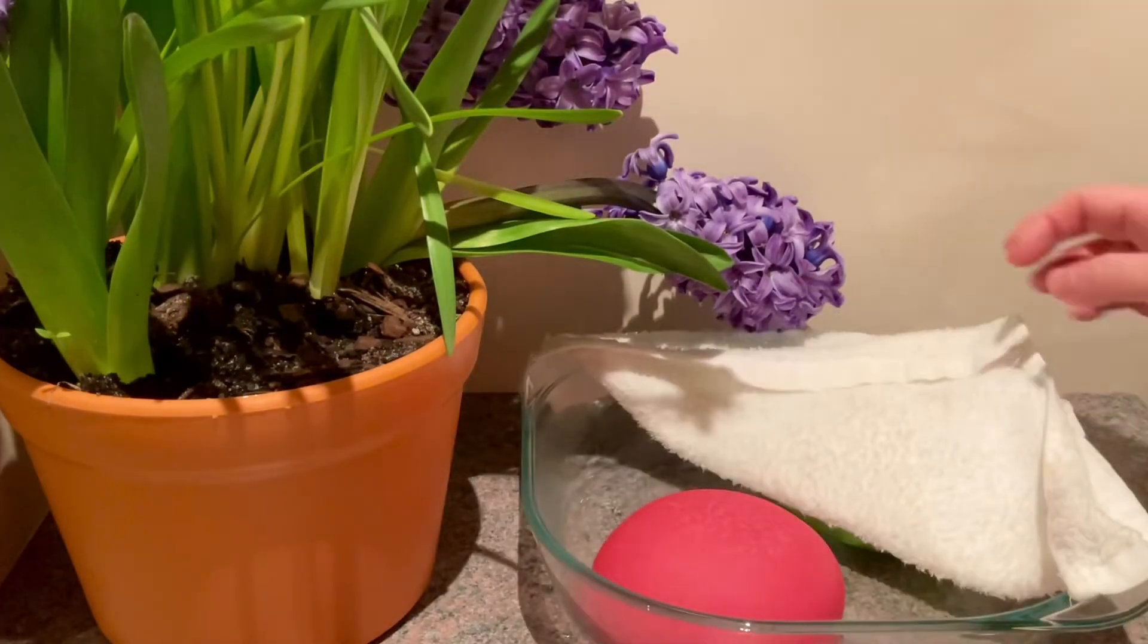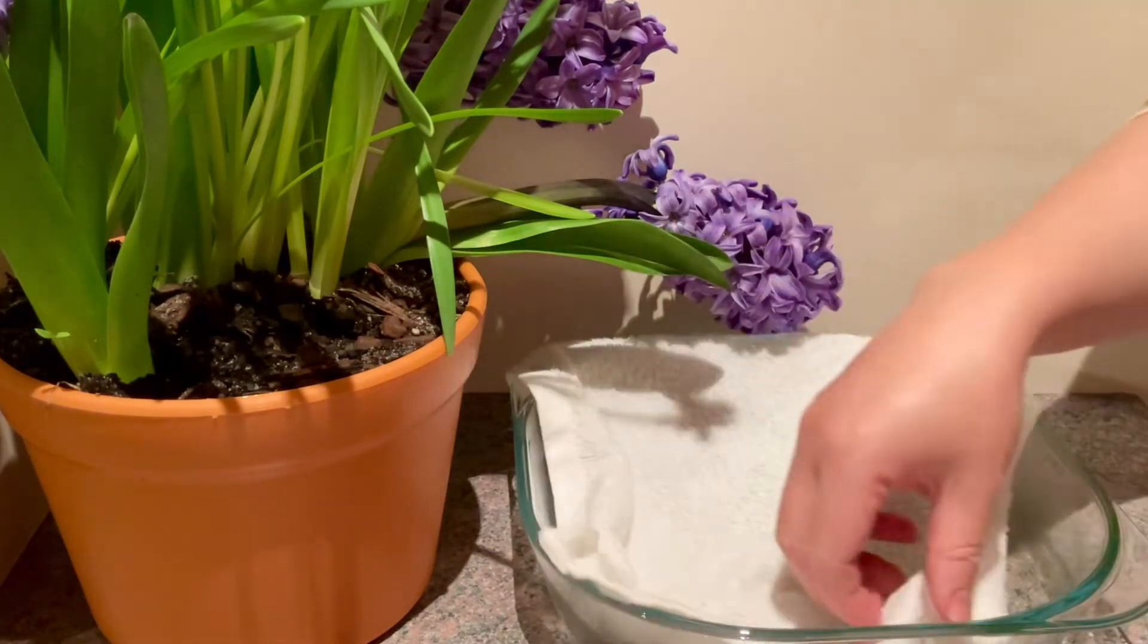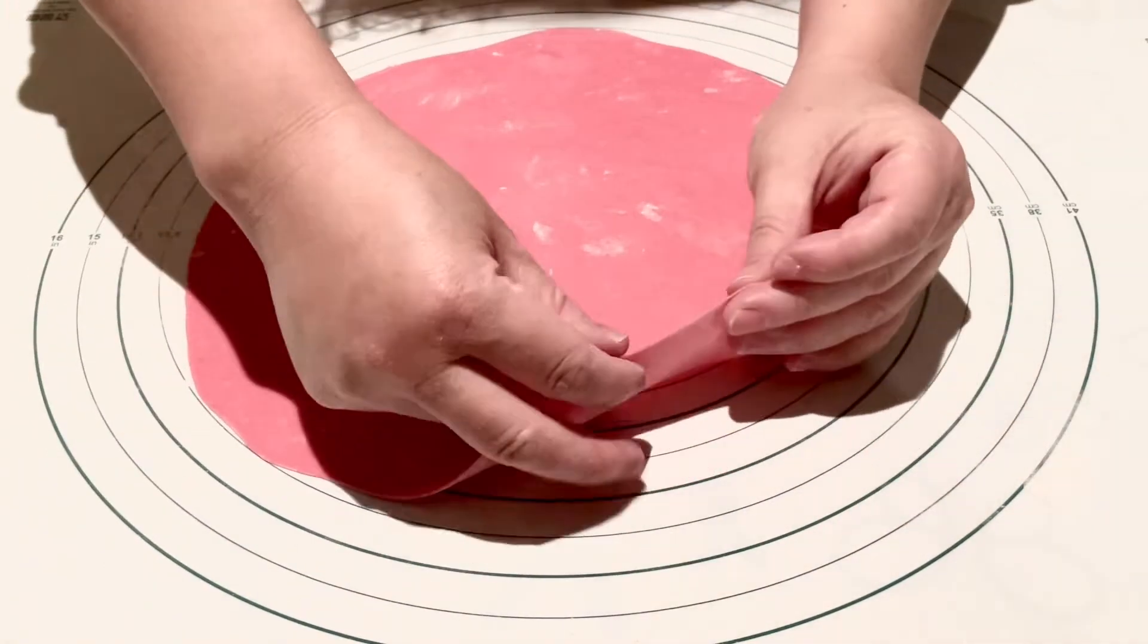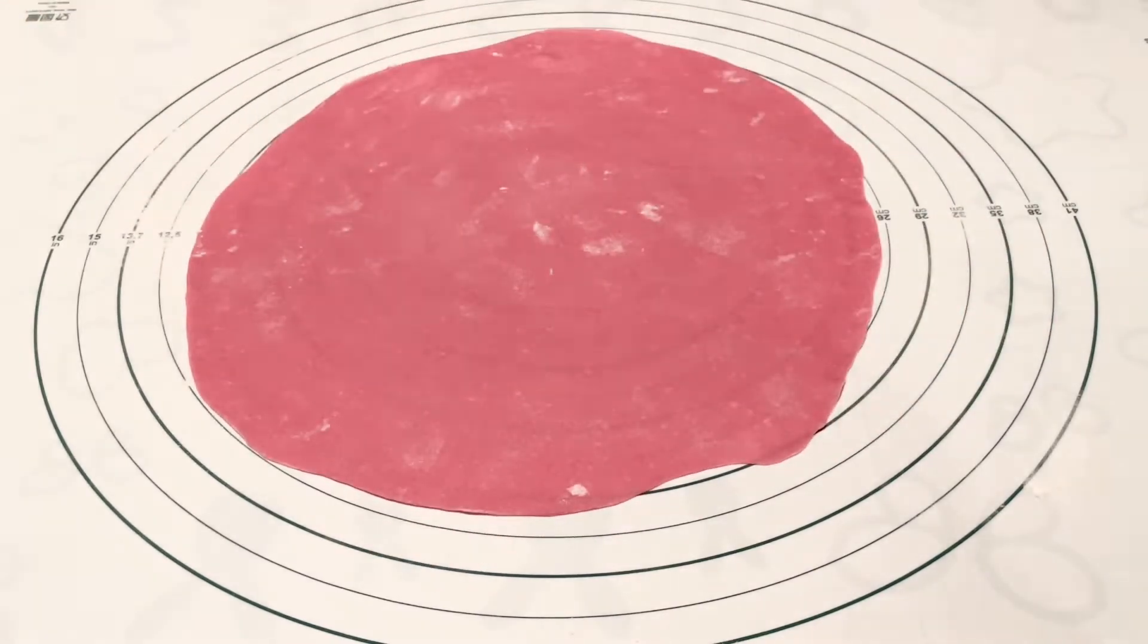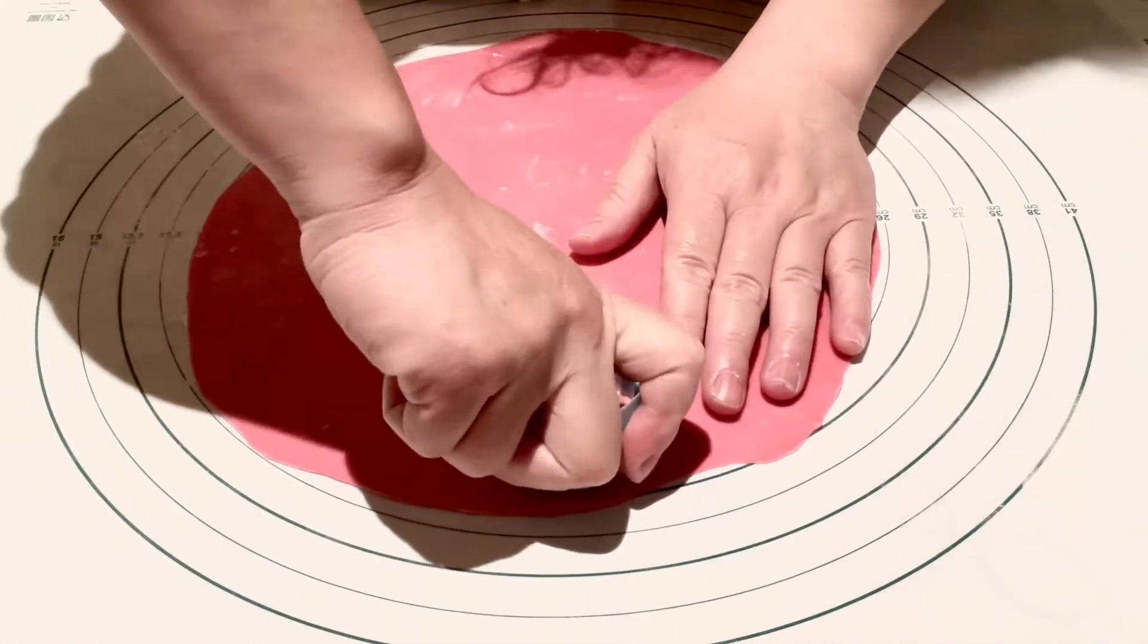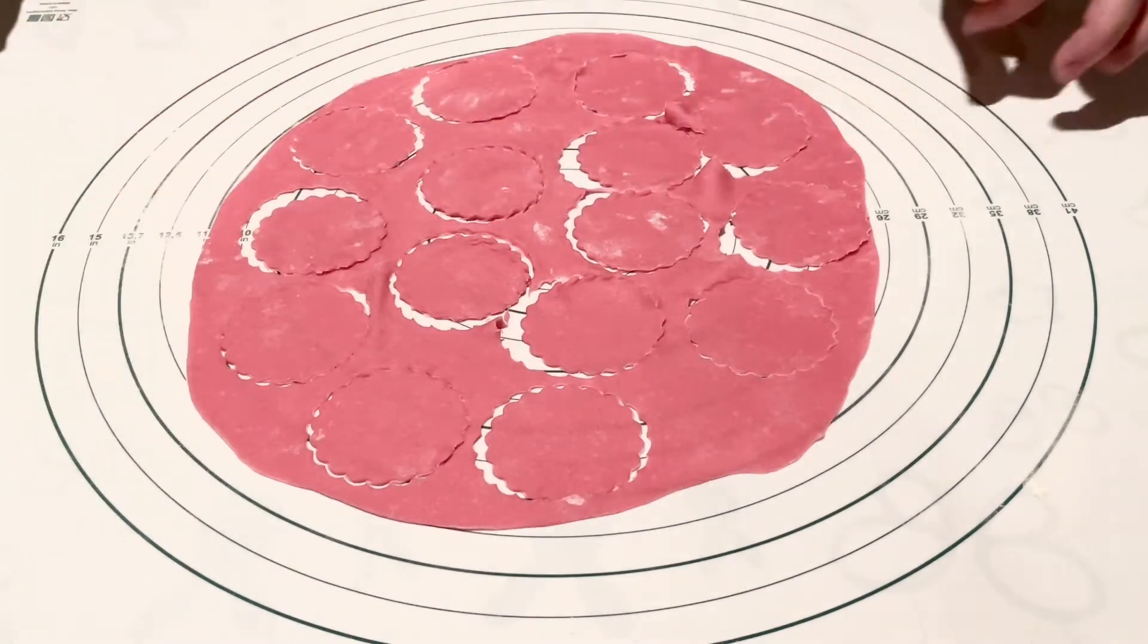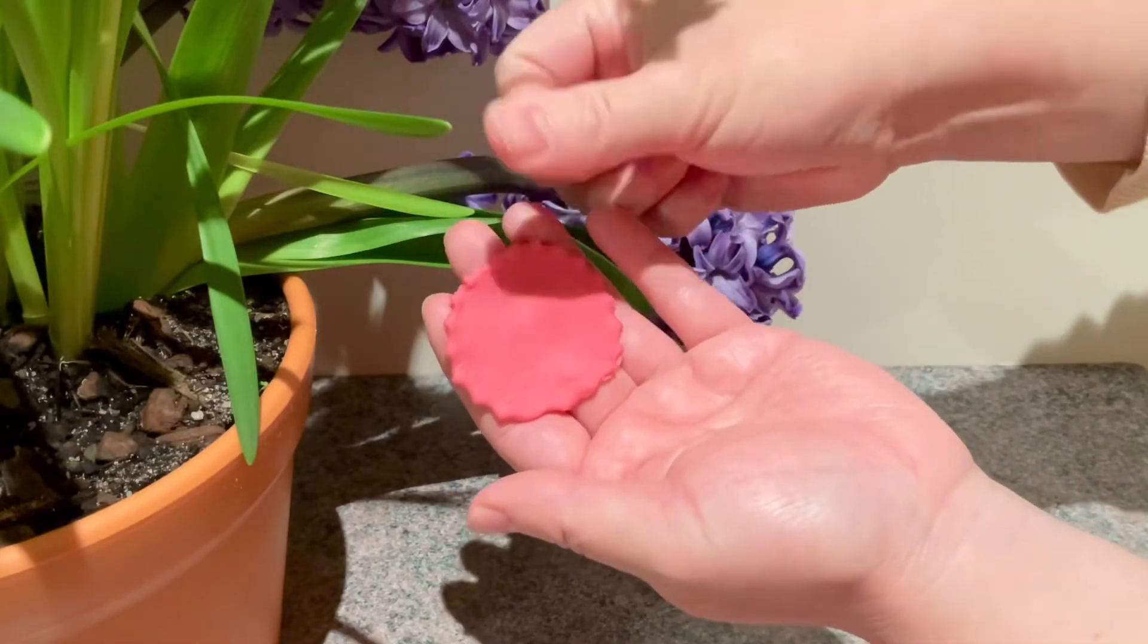10分钟后,开始制作康乃馨。厚度约为1-2毫米。切成小圆片,直径为6厘米。用大拇指与食指相配合,捏出花边。After 10 minutes, start making carnations. Thickness about 1-2mm. Cut into small circles, diameter 6cm. Using thumb and index finger together, pinch out petal edges.